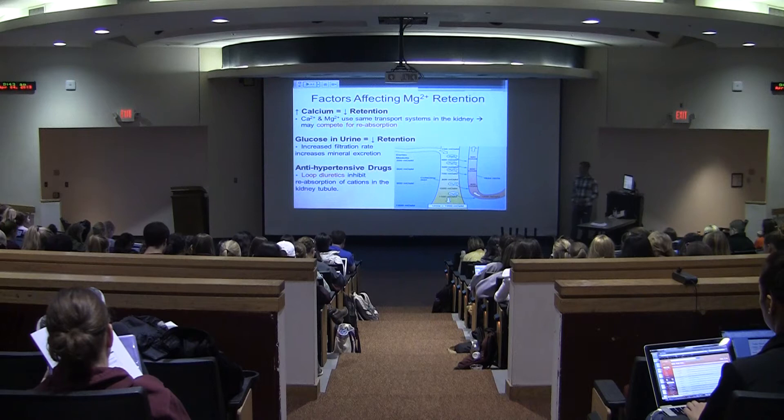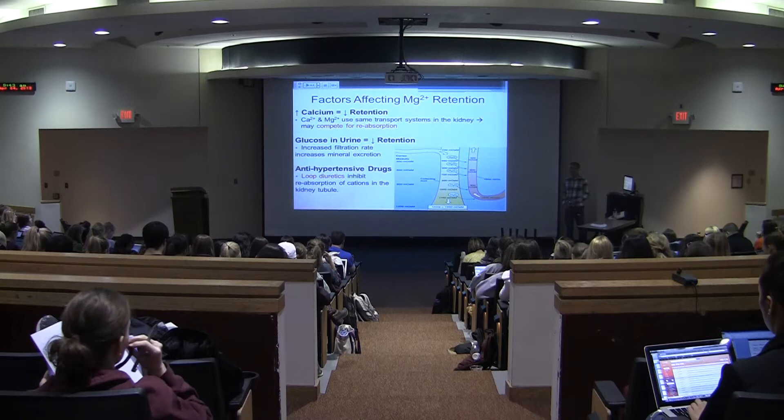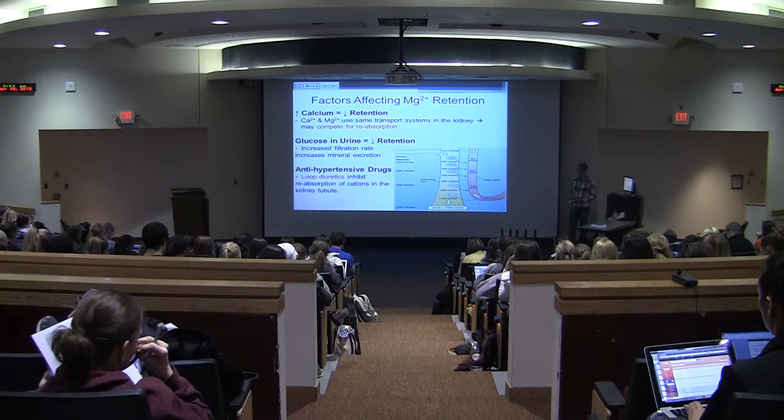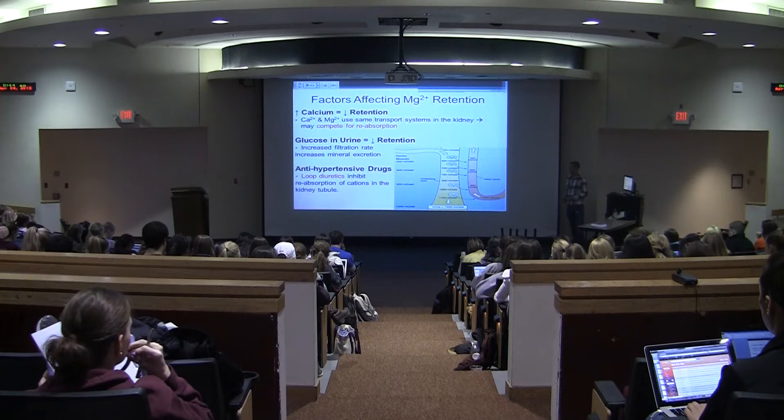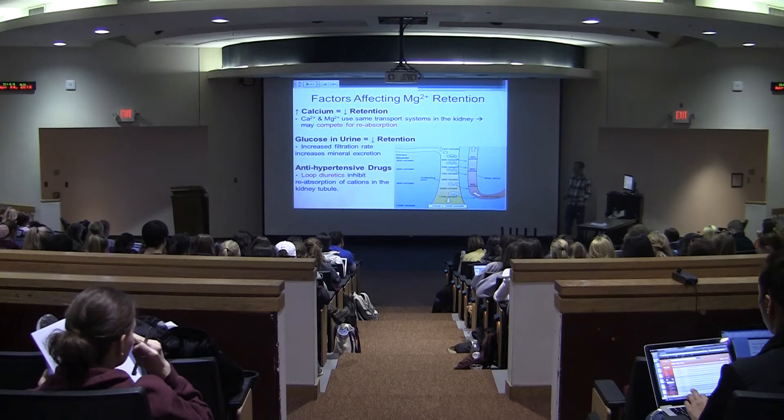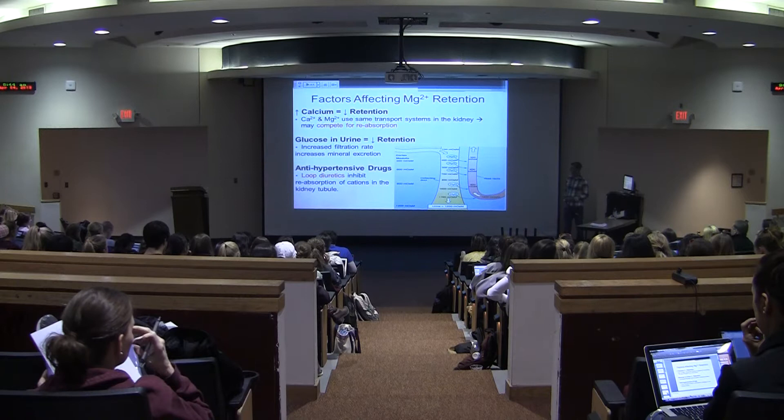Two other things that can affect magnesium retention, and also retention of cations in general, are glucose in the urine, which is present during uncontrolled diabetes. When you have any kind of solute in the urine — with glucose being an example — that is unabsorbed, it increases the solute concentration in the final urine during the collecting duct.